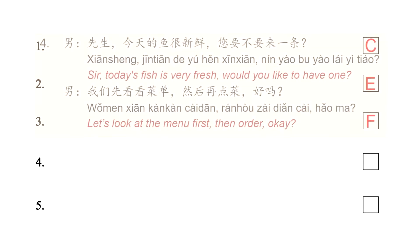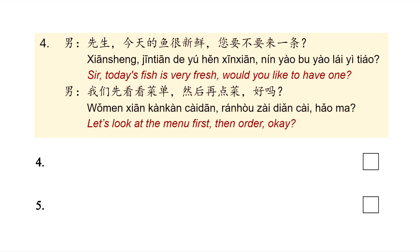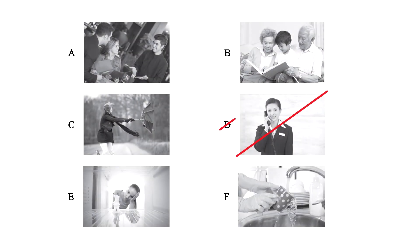In this dialogue, we have a man asking 先生，今天的鱼很新鲜，您要不要来一条？ Sir, today's fish is very fresh, would you like to have one? The other man answers 我们先看看菜单，然后再点菜，好吗？ Let's look at the menu first, then we will order, OK? For this dialogue, we have picture letter A, which is the picture of a restaurant. We have the waiter and some people ordering food.